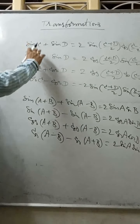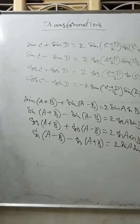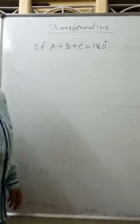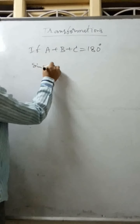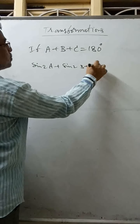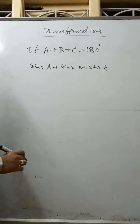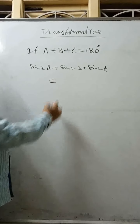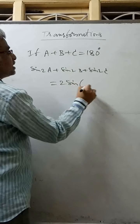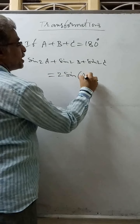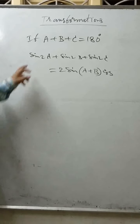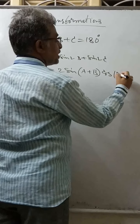We are going to discuss: if A plus B plus C equals 180 degrees, what is sin 2A plus sin 2B plus sin 2C? We will prove this. Using the formula sin C plus sin D equals 2 sin((C+D)/2) cos((C-D)/2), with C = 2A and D = 2B, so (C+D)/2 = A+B and (C-D)/2 = A-B.